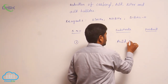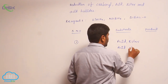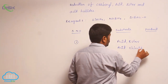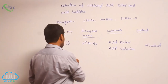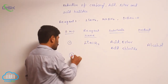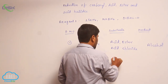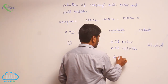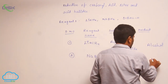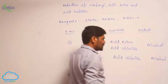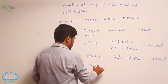For acid chloride reductions: number one, lithium aluminum hydride with acid chloride converts into alcohol. Number two, sodium borohydride with acid chloride as reactant also converts into alcohol. Number three, B2H6 with acid converts into alcohol.